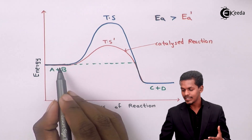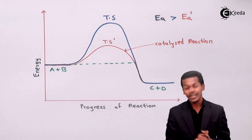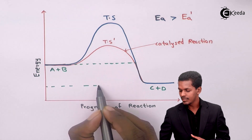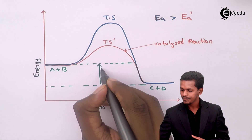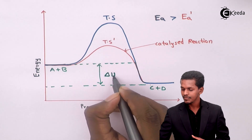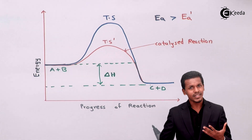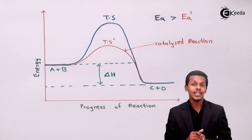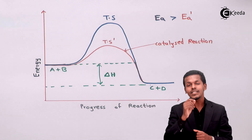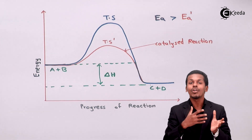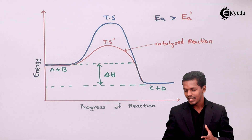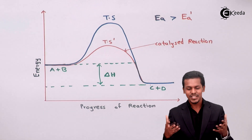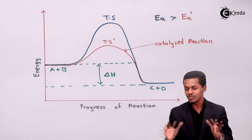We have discussed the energy of A plus B as reactants and C plus D as products, and also the heat of reaction. There is no change in the heat of reaction — the difference in energy level between the reactant and the product is delta H. This reaction is exothermic because C plus D has lower energy compared to A plus B. Even by using a catalyst, we cannot change the magnitude of the heat of reaction; the catalyst only alters the rate of reaction and changes the reaction path.